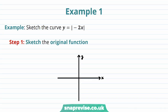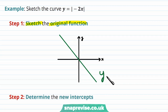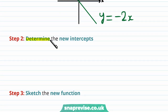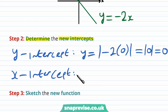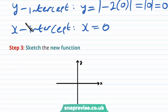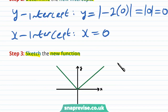Our first example asks us to sketch the curve y equals the modulus of minus 2x. Our first step is to sketch the original function — the graph of y equals minus 2x looks like this. The second step is to determine the new intercepts. The y-intercept: y equals the modulus of minus 2 times 0, which is the modulus of 0, which is 0. The x-intercept corresponds to precisely where the original function intercepts the x-axis, and this occurs when x is 0. Our final step is to sketch the modulus function — the positive branch on the left-hand side of 0 stays the same, and the negative part gets reflected. So this is the graph of y equals the modulus of minus 2x.